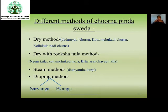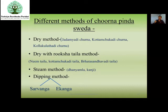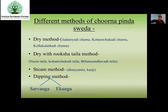Coming to Churna Pinda Sveda — we use it in different methods: dry method, dry with Ruksha Taila method, steam method, and dipping method, for both Sarvanga and Ekanga. In the dry method, just like Valuka Sveda, we use only Churna — after drying, we put it in a Potali and use for Svedana. In the dry with Ruksha Taila method, we use Churna plus Taila combination to make a Potali. In the steam method, we use Dhanayamla or Kanji — prepare a Potali, keep it like Dholi Yantra Svedana above the boiling Dhanayamla, and the steam goes through.